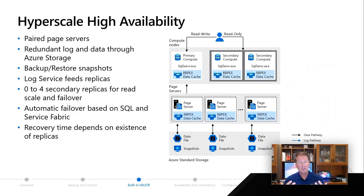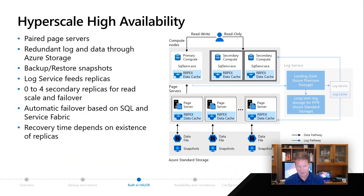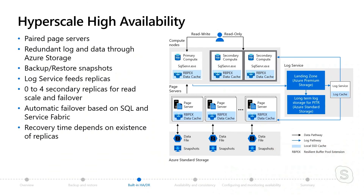We have something called a log service. The log service is not like an availability group service, but it's similar in the sense that we use log changes to feed these replicas. Looking at this diagram, you see a primary and secondaries — you can have zero to four secondary replicas for read scale and failover capabilities.